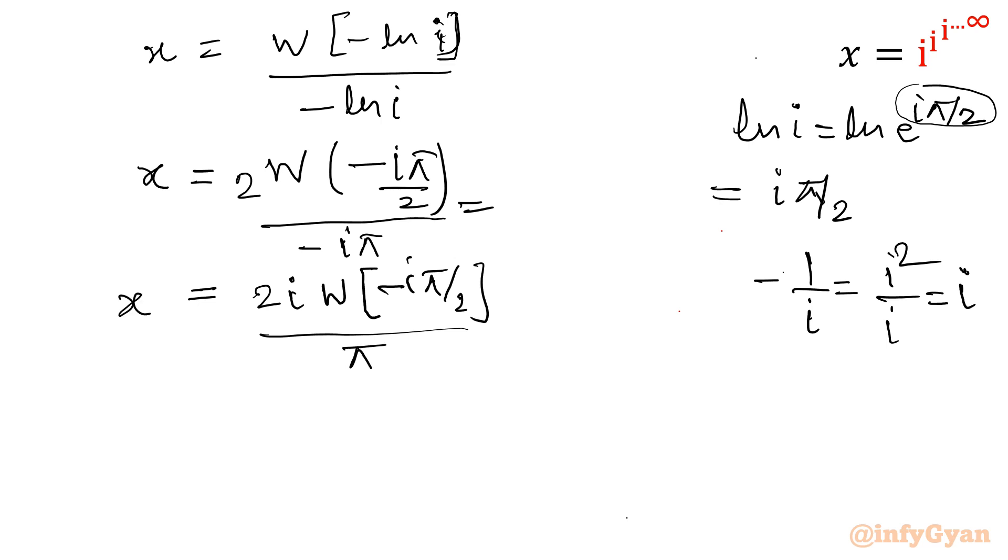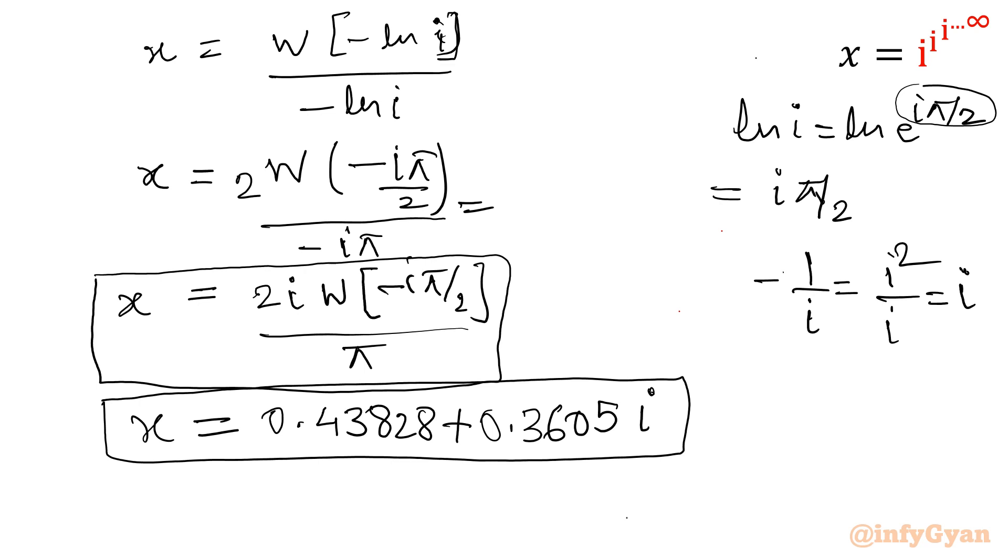This is our x, the value of the given expression. And if you will simplify using Wolfram Alpha tool, then that value will come out 0.43828 plus 0.36059i. This is our value of that function. This function is very useful as far as complex solution or impossible equation solutions are concerned.